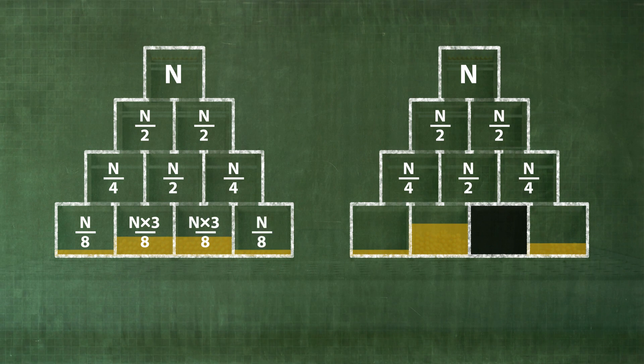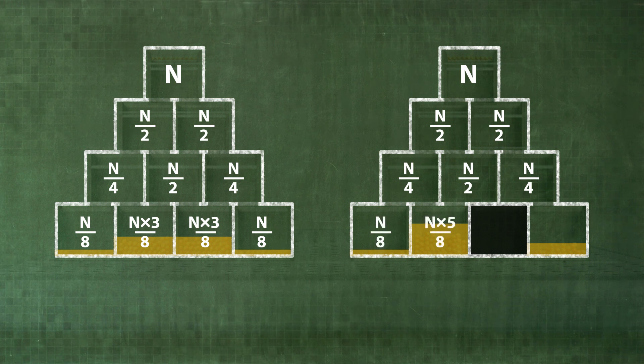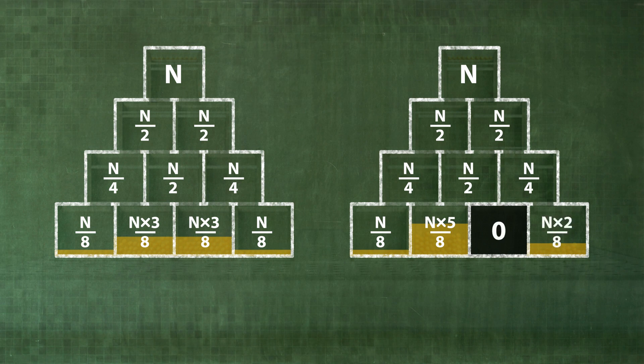For the right-hand pyramid, however, the distribution is n eighths, 5 times n eighths, 0, 2 times n eighths.